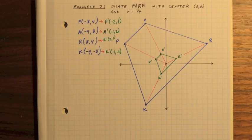And then we'll continue plotting the rest of our points with a scale factor of 1 fourth. And so we have our trapezoid that is now 1 fourth the size of the original.